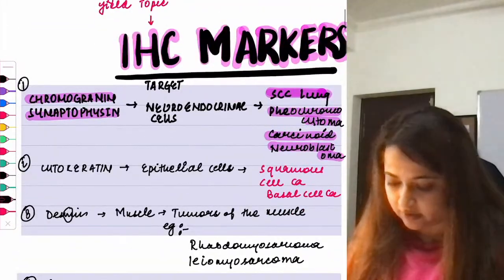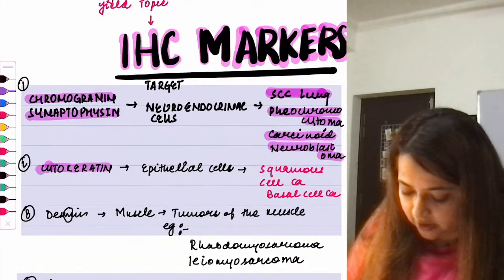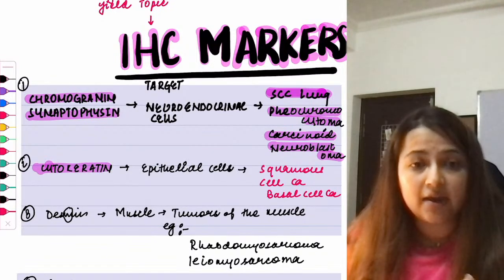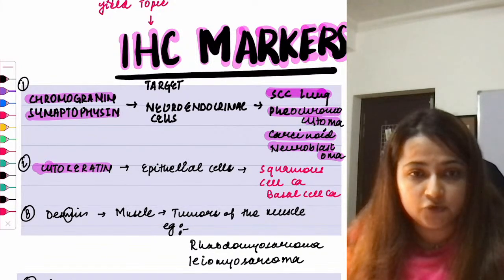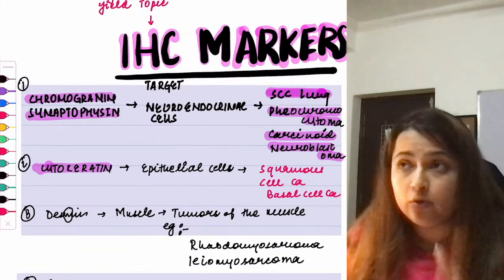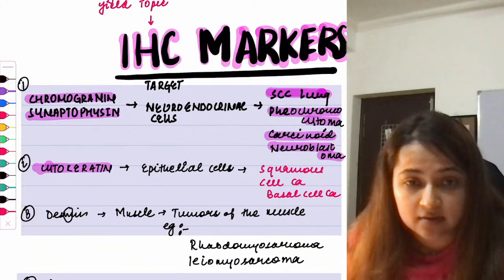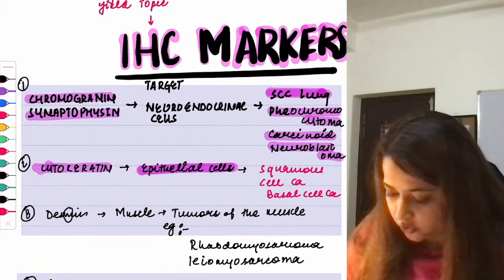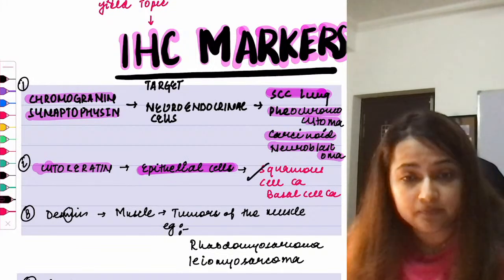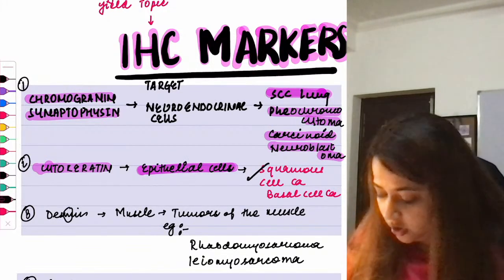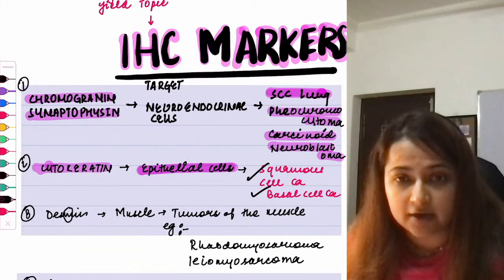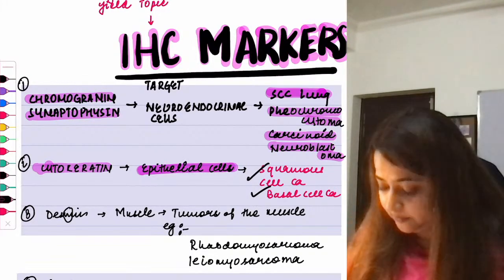Coming back to IHC markers. Second: cytokeratin indicates tumors arising from epithelial cells — examples are squamous cell carcinoma (of skin or lung) and basal cell carcinoma. One related question: increased serum calcium — hypercalcemia of malignancy — is the paraneoplastic syndrome associated with squamous cell carcinoma of the lung.